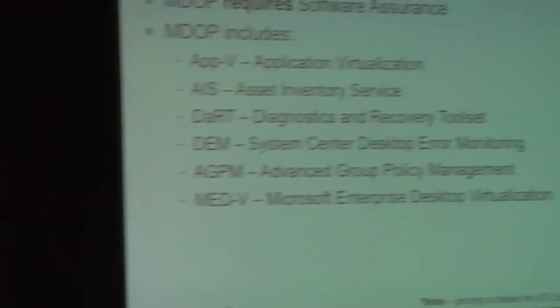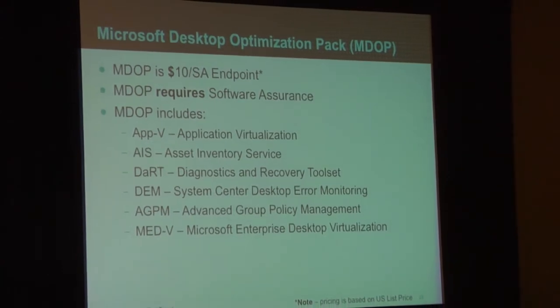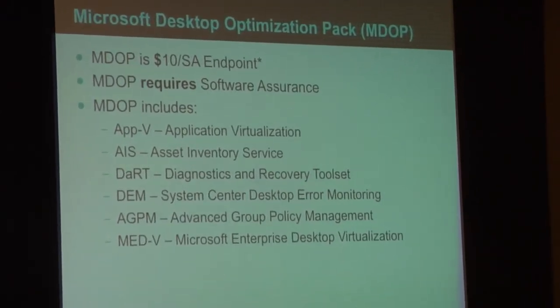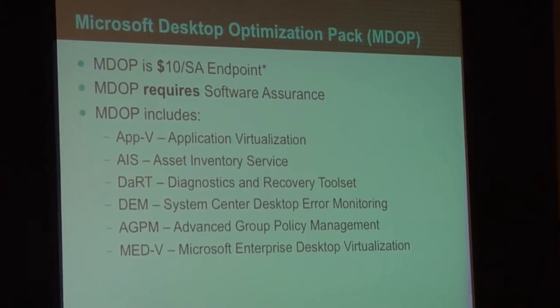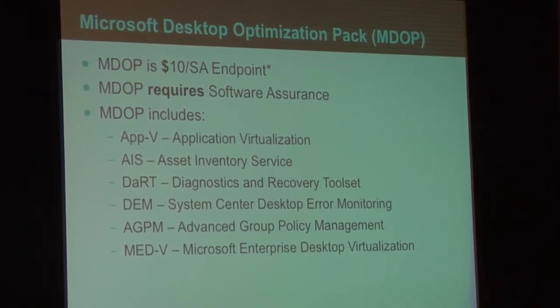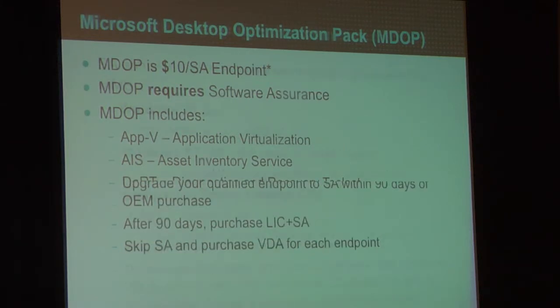MDOP — the Microsoft Desktop Optimization Pack — is the other way to get App-V. MDOP requires SA, and it's also available as an add-on to VDA, so you don't have to physically have an SA endpoint. You also get advanced group policy management, which is important if you're still managing desktops heavily with GPOs. MedV started really great for Windows 7 migrations but kind of faded — we're not sure exactly where it's going, though we'll probably know more after Windows 8 comes out.